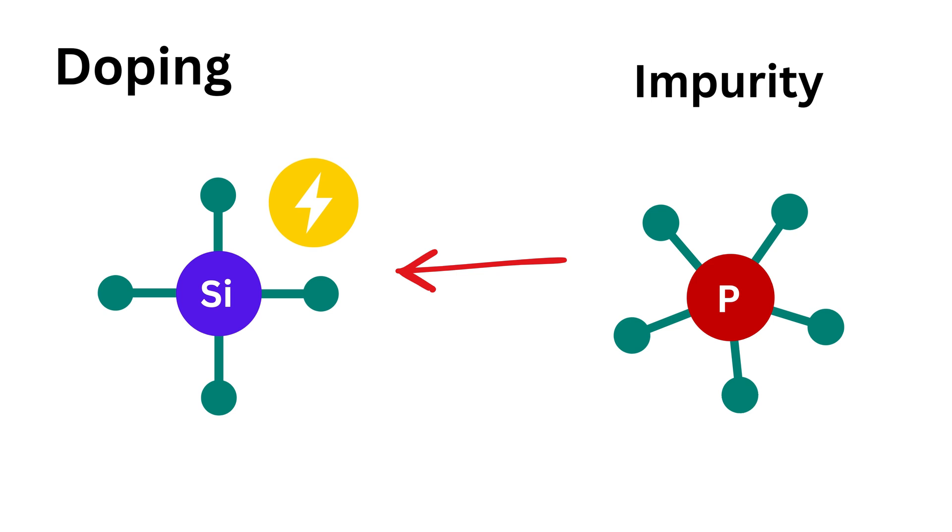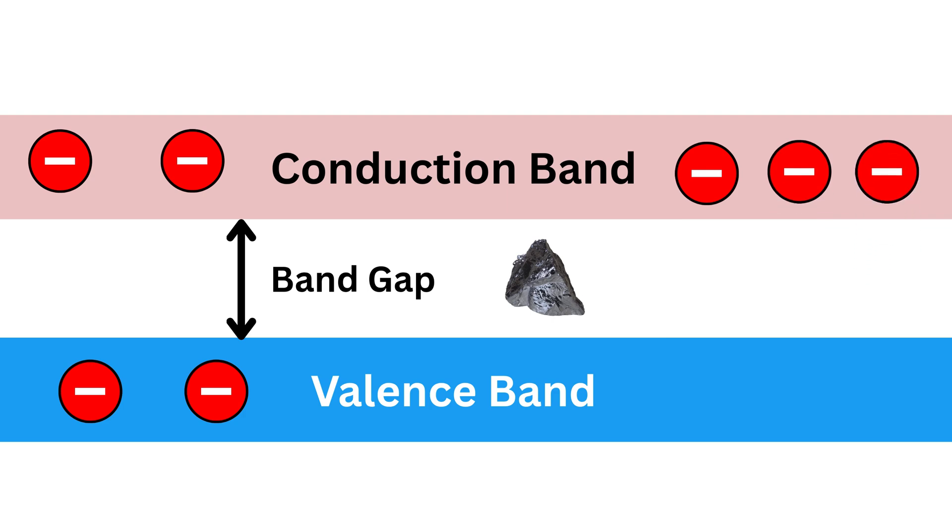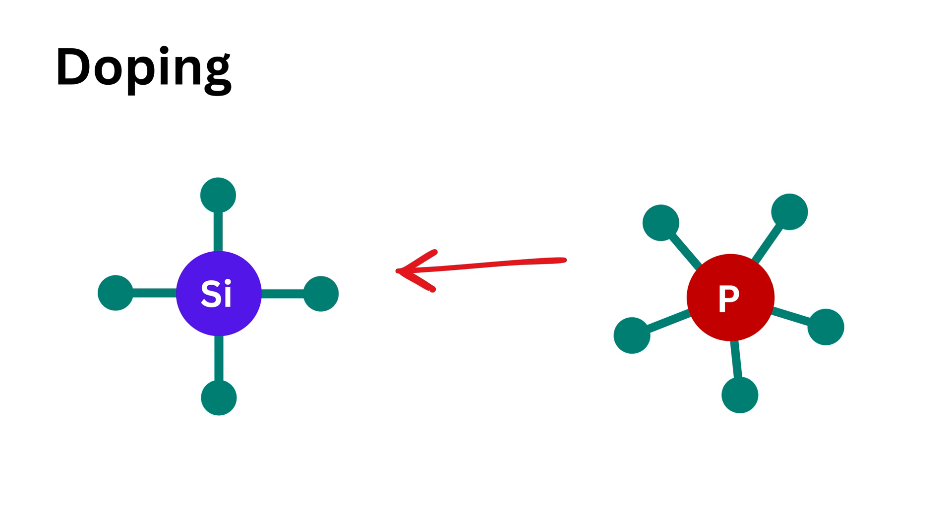Let's first look at atoms with five valence electrons, like phosphorus. When a phosphorus atom replaces a silicon atom in the crystal, four of its electrons form covalent bonds as usual, but that fifth one—it has no bond to form. It's free. The extra electrons from five-valence-electron impurities have enough energy to jump directly into the conduction band where they can move freely and carry current, something that doesn't happen easily in pure silicon. This kind of doped silicon is called N-type material. The N stands for negative because electrons carry negative charge.